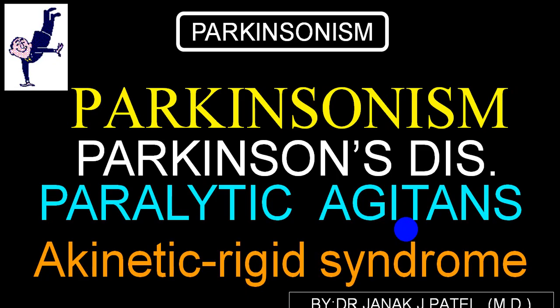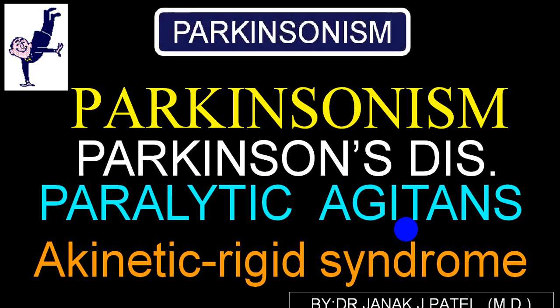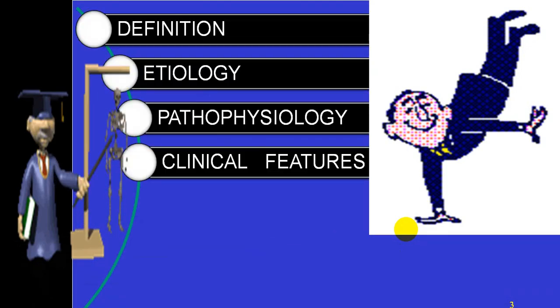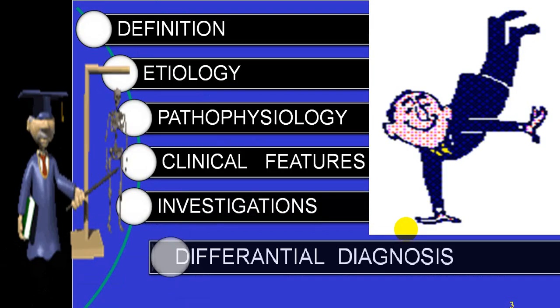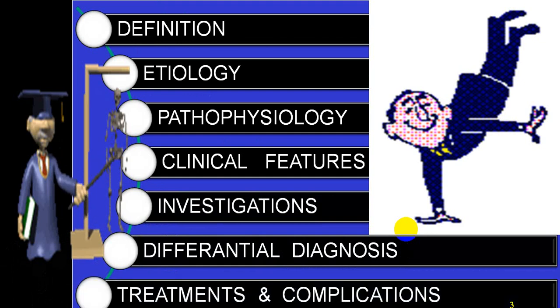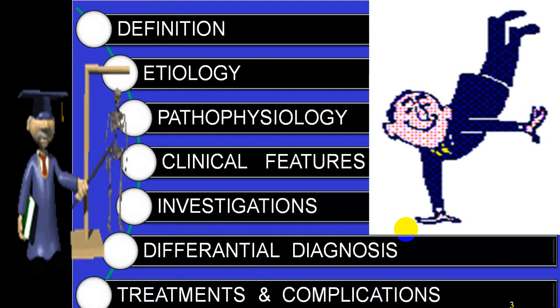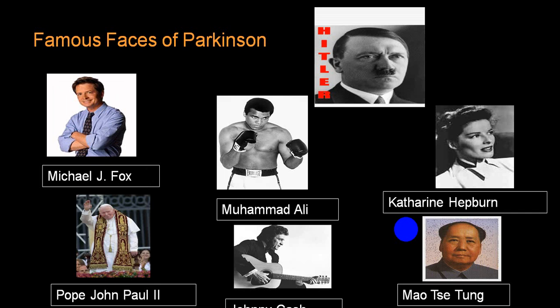There are a few terms: Parkinsonism, Parkinson's disease, and also the term paralysis agitans or akinetic rigid syndrome. These are frequently utilized terms. We'll be discussing under the common headings: definition, etiology, pathophysiology, clinical features, investigations, differential diagnosis, treatment, and complications. These are some famous persons who were suffering from Parkinson's disease.